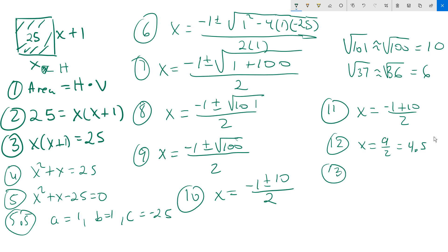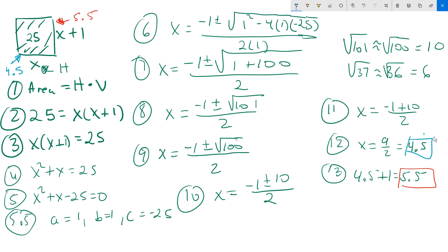This is the value of x. Back in the picture, we also had x plus 1 to find. Since x equals 4.5, then x plus 1 is 4.5 plus 1, which is 5.5. So the vertical side is about 5.5 and the horizontal side is about 4.5. If you multiply 5.5 by 4.5, you get approximately 25, which is the area we designated in the first place.